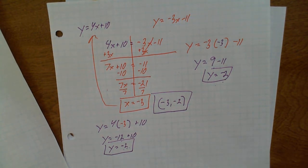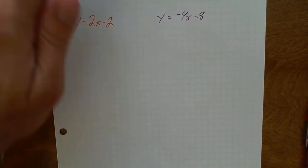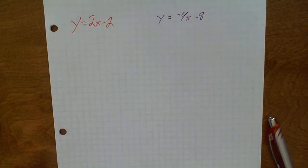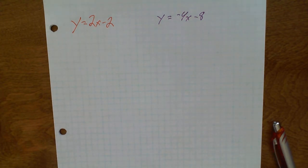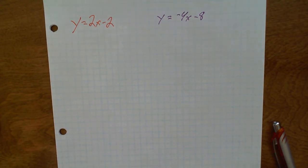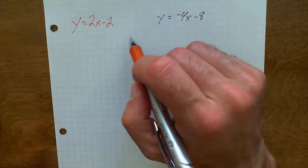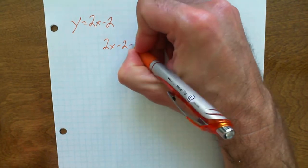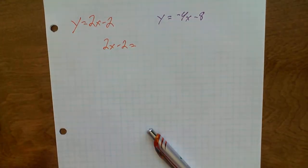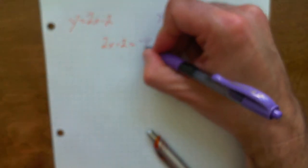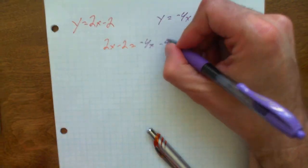That's how you do the Equal Values Method — let's try a couple more examples and then we'll be done. So now let's use the Equal Values Method to solve the system of equations for these two linear equations. Let's figure out where they intersect. They're both equal to y, so we can set them equal to each other: 2x minus 2 equals negative 4x minus 8.